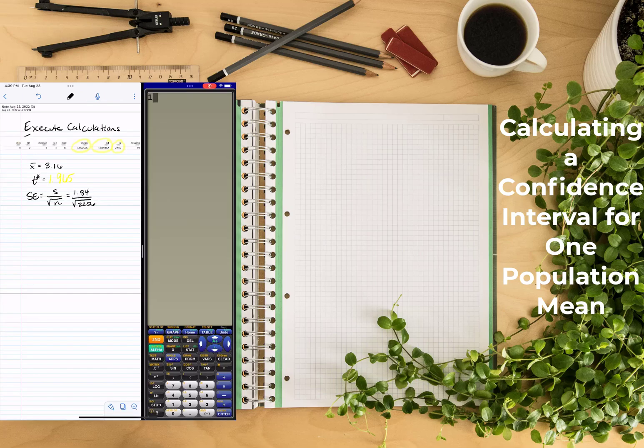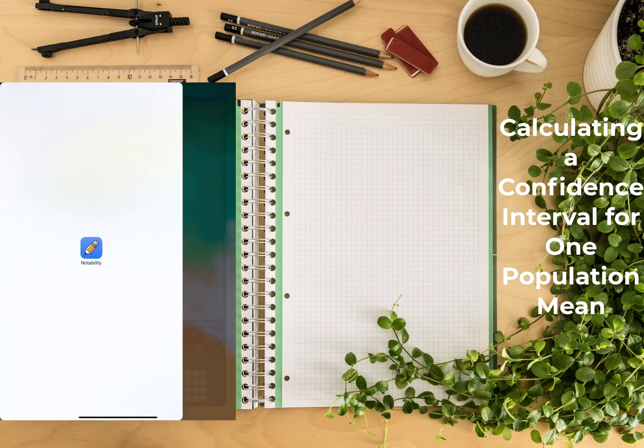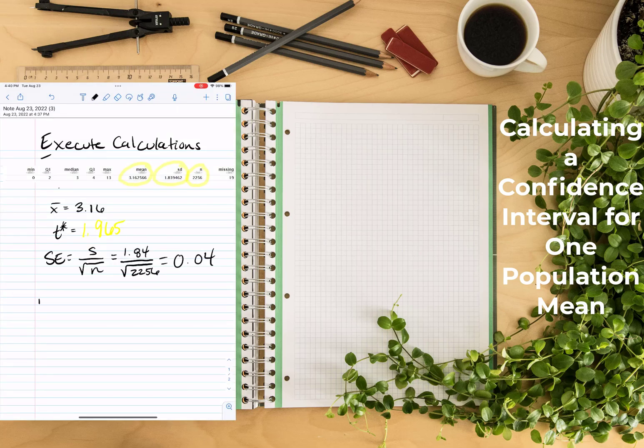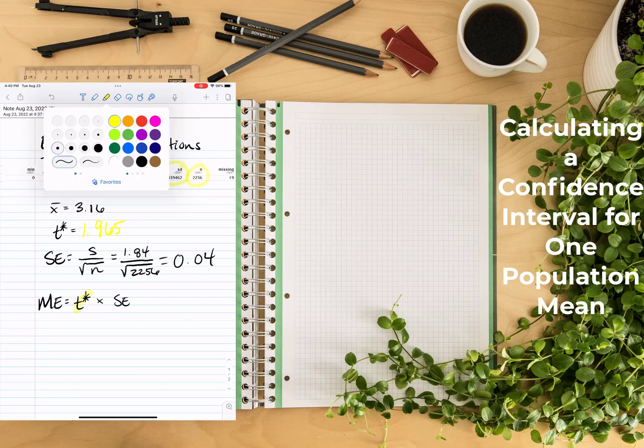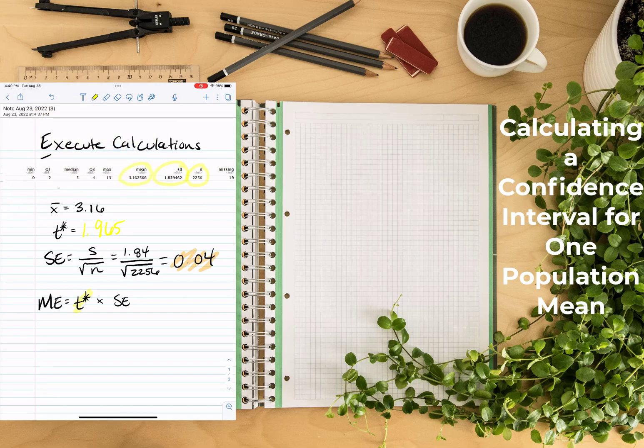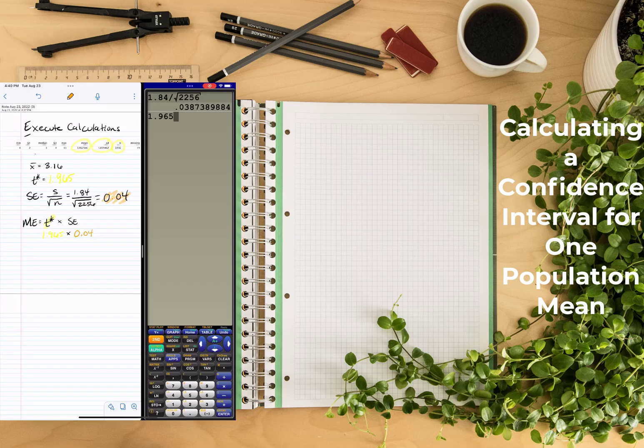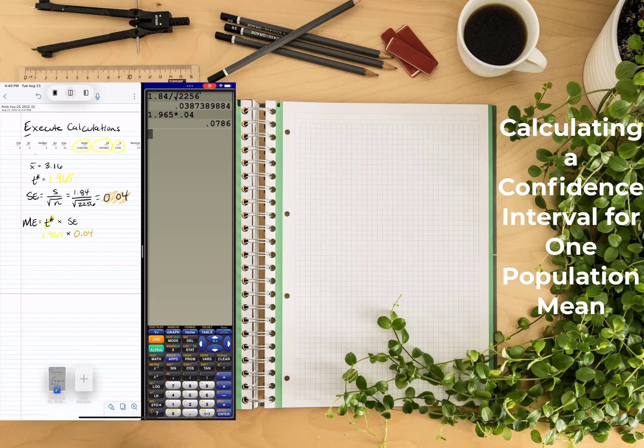Next, I would calculate standard error, which takes the standard deviation and divides by the sample size. And that is going to be 0.04, going out just two decimal places. After we calculate the standard error and we have the t-star, we can take those two values and multiply them to find what's called the margin of error. So here we have 1.965, that's our t-star, times the standard error we found above, which is 0.04. And the product of that is our margin of error, which comes out to be approximately 0.08.